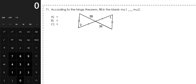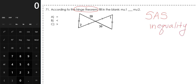Your options are equal, less than, or greater than. The Hinge Theorem is also known as the SAS Inequality Theorem, which means that if you have two side lengths that are congruent — which in this case we do — we have one pair of sides between the two triangles with a single tick mark, and a second pair with a double tick mark. So if you have two pairs of sides congruent, the angle between them will determine which side length between the two triangles is longer.